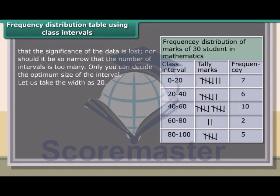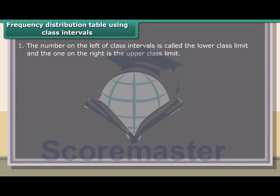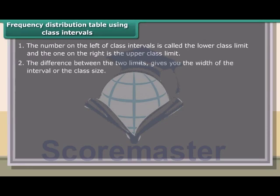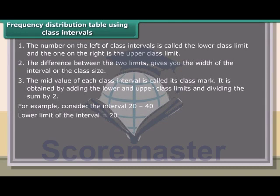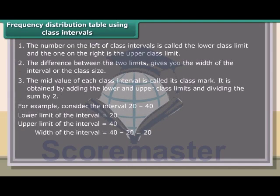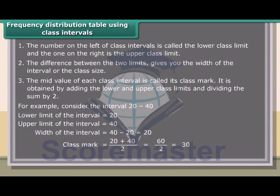Let us take the width as 20. The number on the left of a class interval is called the lower class limit, and the one on the right is the upper class limit. The difference between the two limits gives you the width of the interval or the class size. The mid-value of each class interval is called its class mark, obtained by adding the lower and upper class limits and dividing by 2. For example, for the interval 20 to 40: lower limit = 20, upper limit = 40, width = 40 − 20 = 20, class mark = (20 + 40) / 2 = 30.